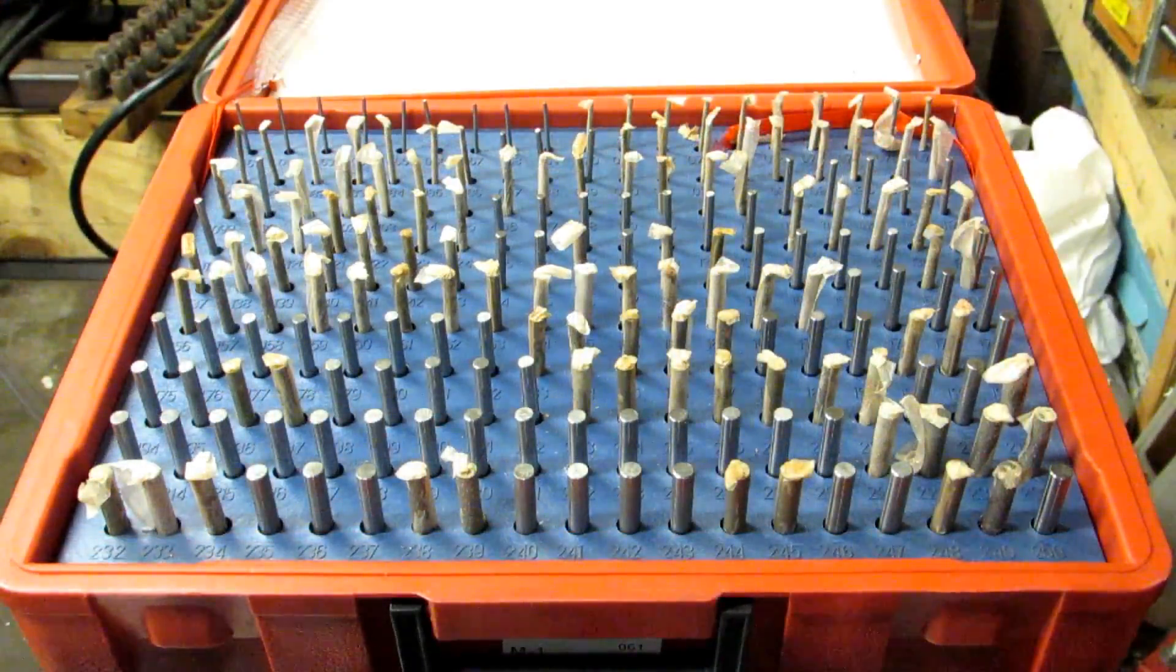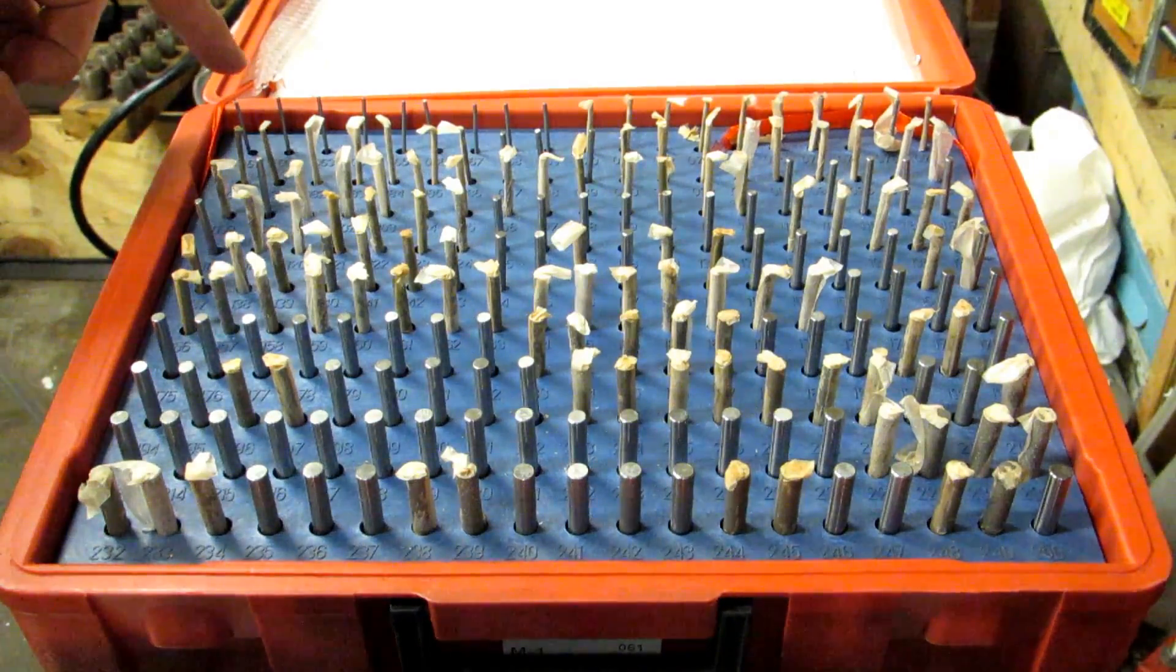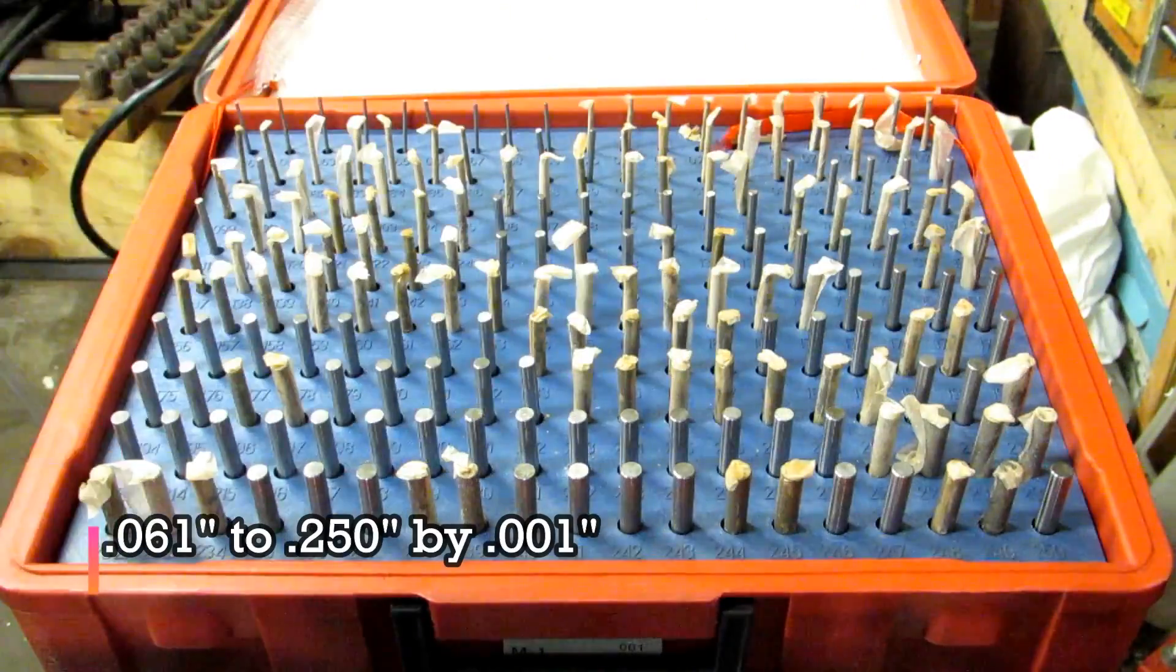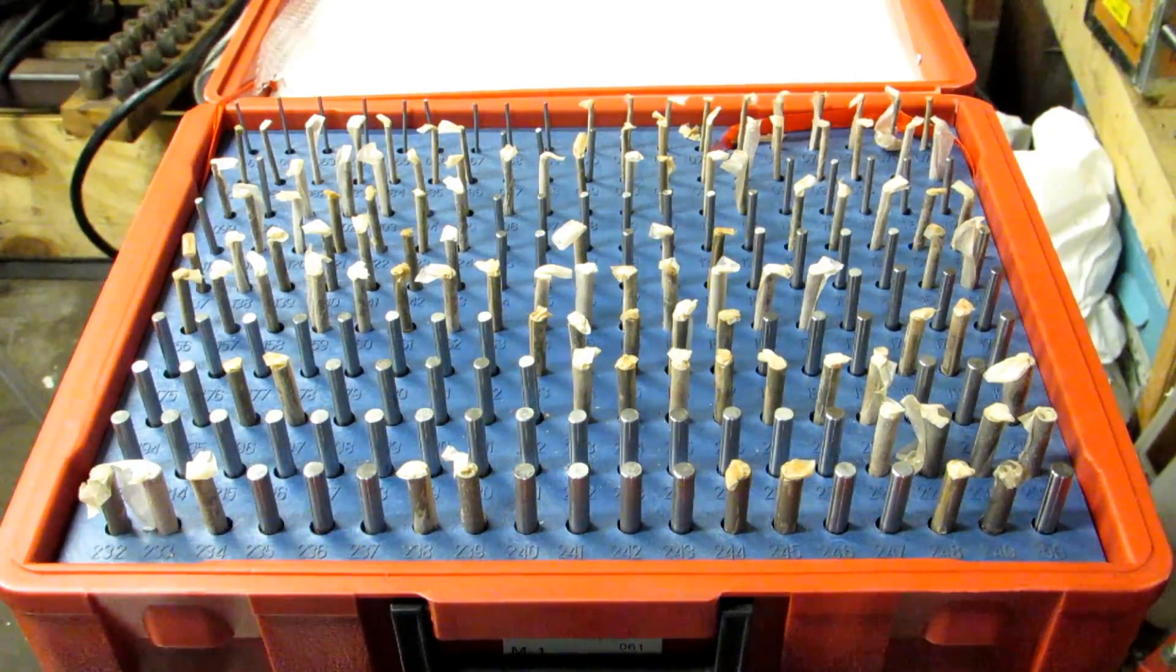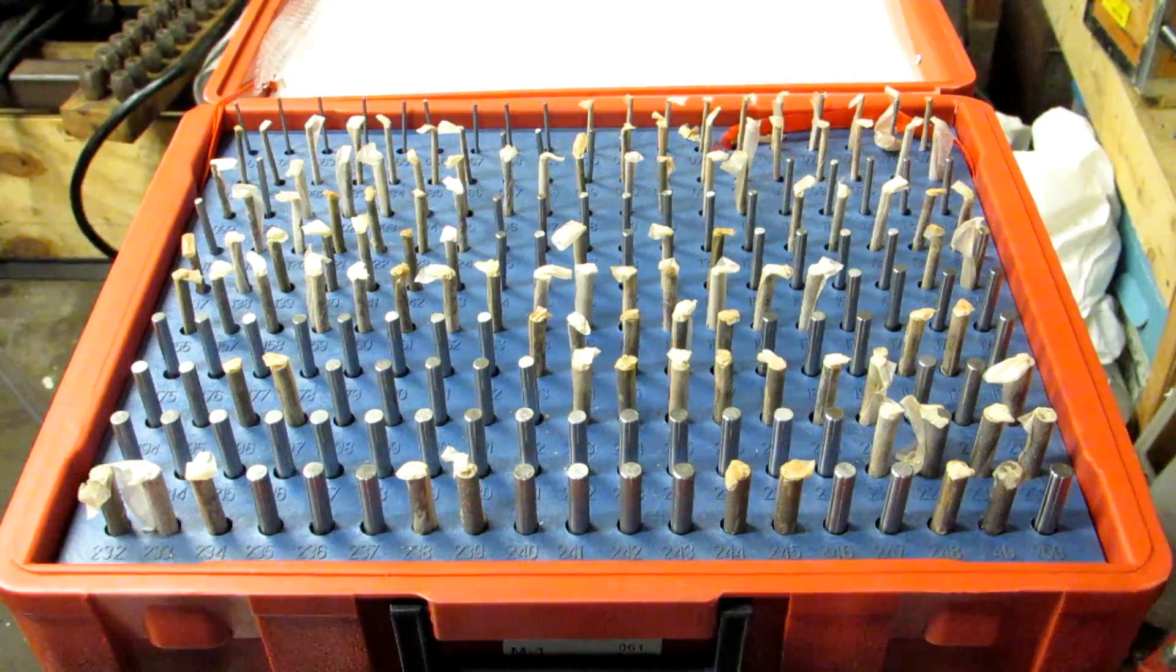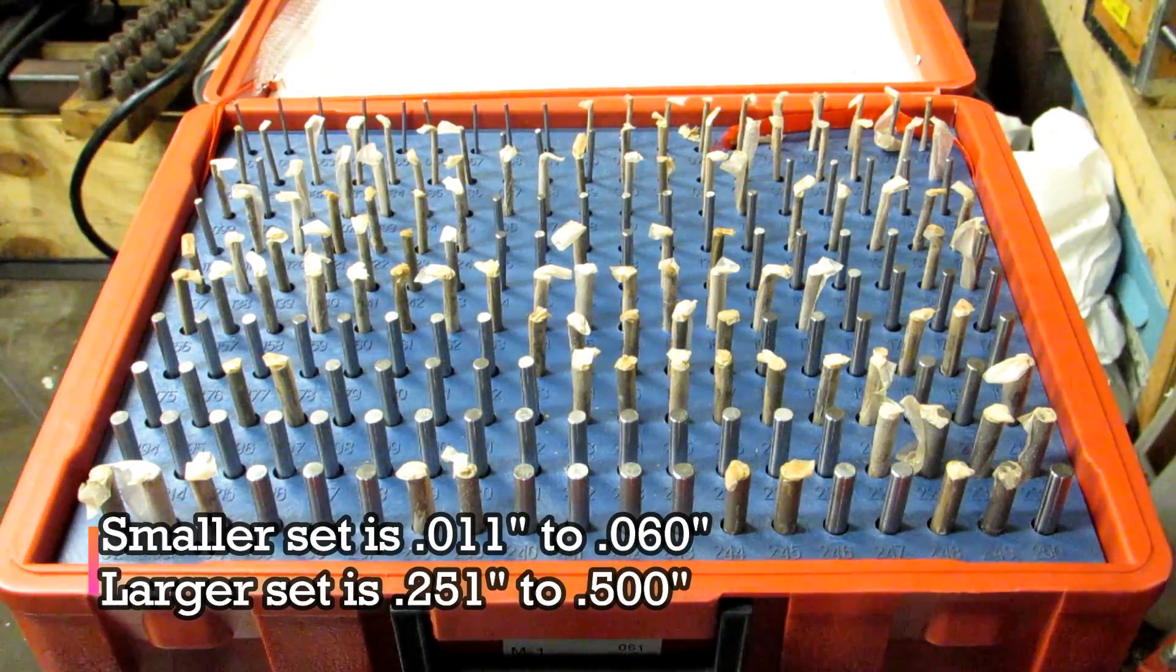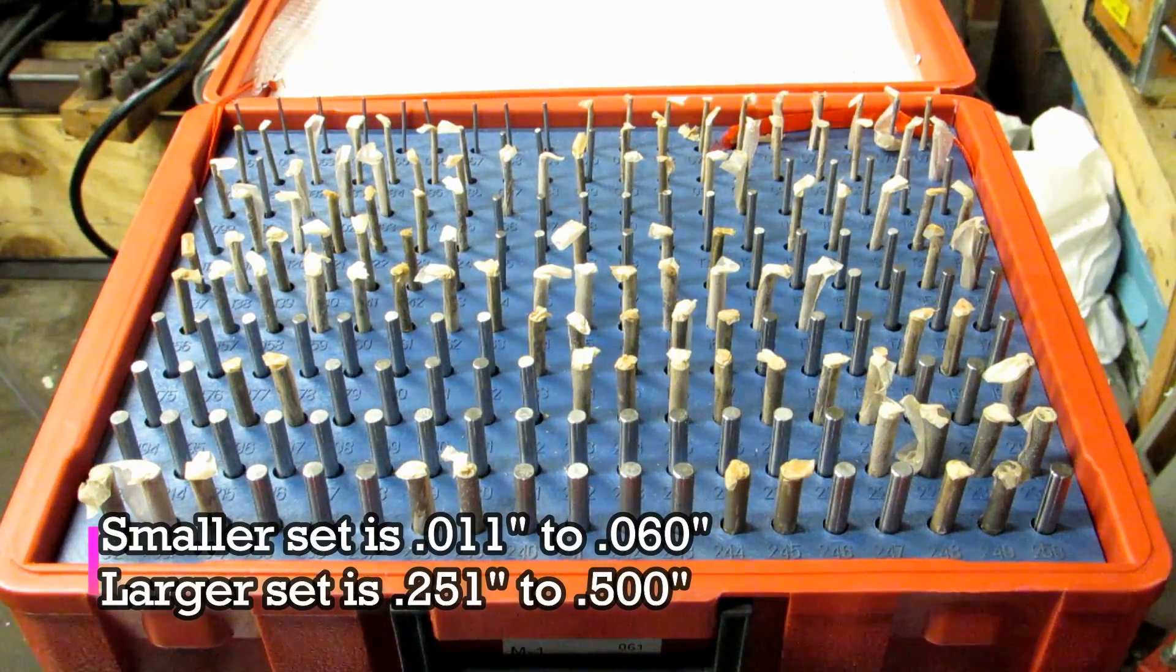Gauge pins are generally sold in sets. This one goes from 61 thousandths of an inch up to 250 thousandths of an inch by thousandths of an inch. They have a smaller set that goes from 11 thousandths up to 60 thousandths and a larger set that goes from 251 thousandths up to half an inch.